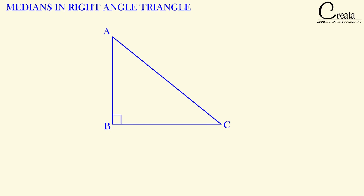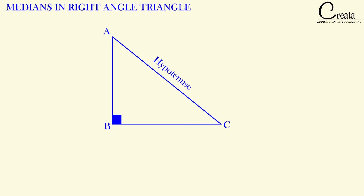We know what a right angle triangle is. A right angle triangle is a triangle with one angle of 90 degrees. Here this angle is a 90 degree angle. The side opposite to the 90 degree angle is known as the hypotenuse. Here this side is the hypotenuse, and the remaining two sides are known as the legs of the triangle.